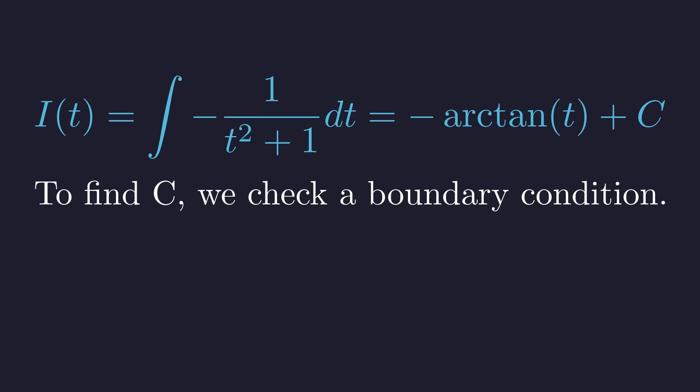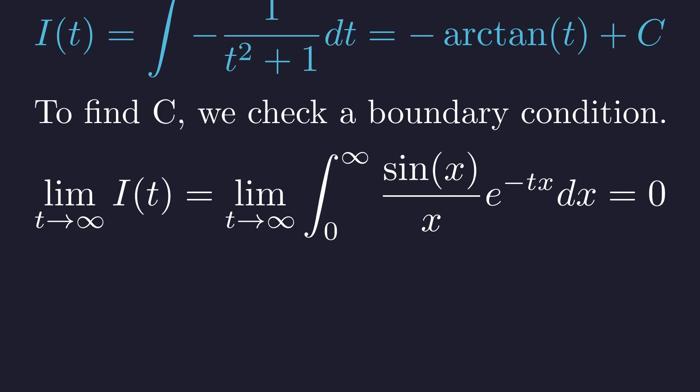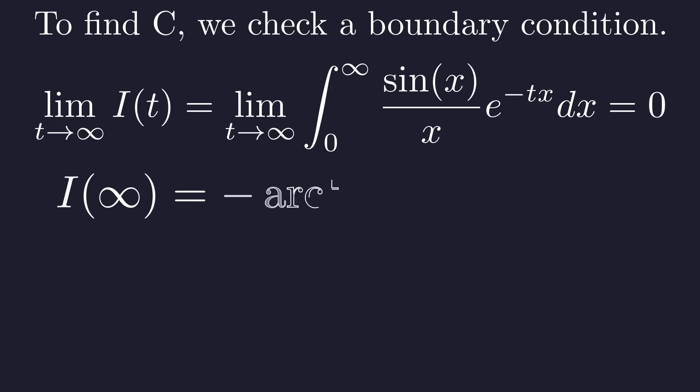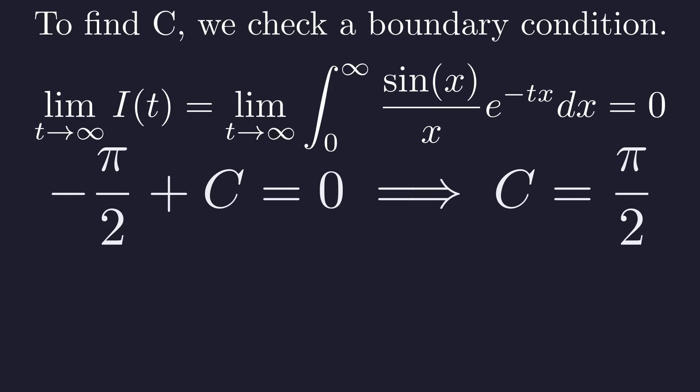we need to evaluate our function I of t at a convenient point. Let's consider what happens as t approaches infinity. As t goes to infinity, the exponential term e to the power of negative t times x goes to 0 for any positive x. This makes the entire integrand 0, so the integral itself is 0. Thus, I of infinity equals 0. Now we use this in our expression for I of t. We know that the arctangent of infinity is pi over 2, so negative pi over 2 plus c equals 0, which means c must be pi over 2.